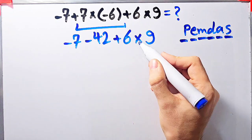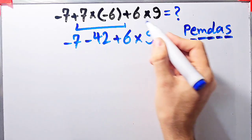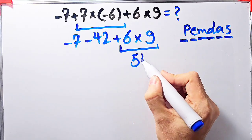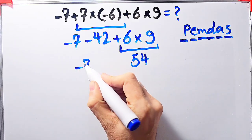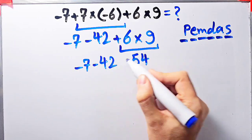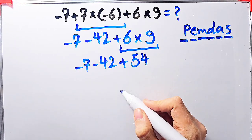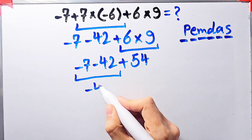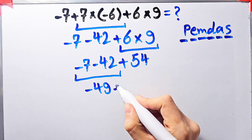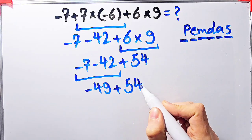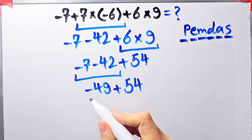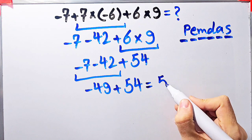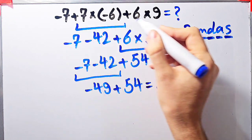Now we have subtraction, addition, and multiplication. First we do the multiplication: 6 times 9 equals 54. Now the question is negative 7 minus 42 plus 54. Negative 7 minus 42 equals negative 49, and negative 49 plus 54 equals 5. The final answer of this question equals 5.